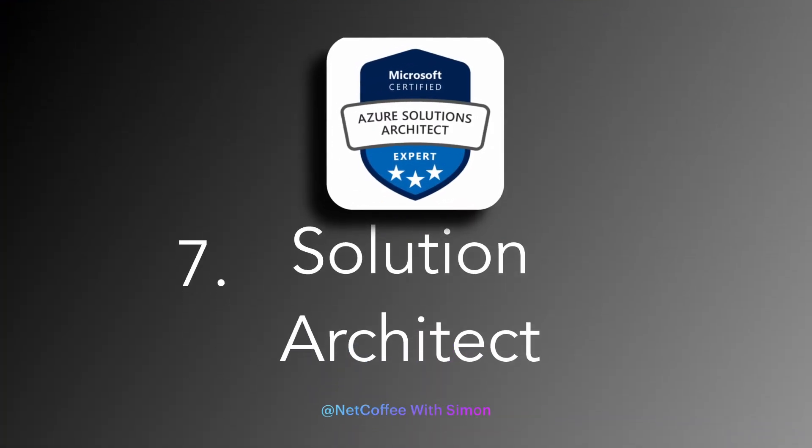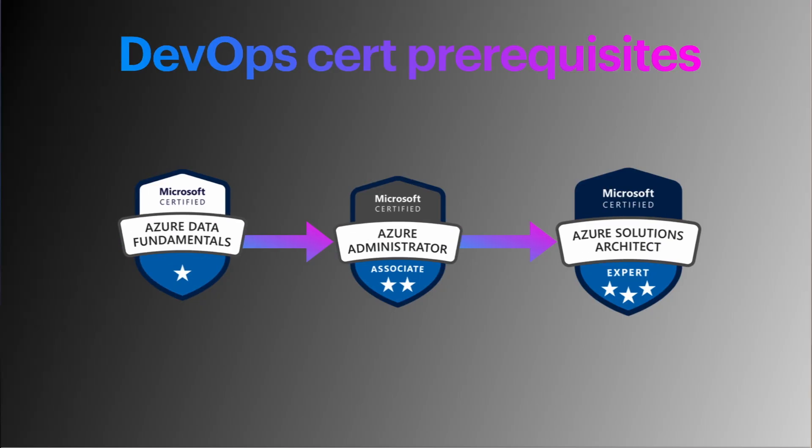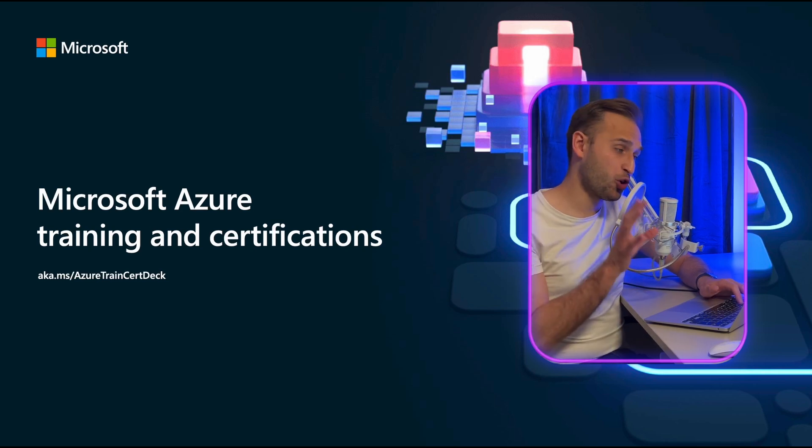The second Expert-level certification is AZ-305, Azure Solutions Architect Expert. Like the DevOps expert exam, this also requires a prerequisite — the Azure Administrator Associate exam (AZ-104). This is an advanced exam, and I would strongly recommend solid hands-on project experience and working in an enterprise environment before attempting it. Topics include governance, compute, application architecture, storage, data integration, authentication, networking, business continuity, and migration.